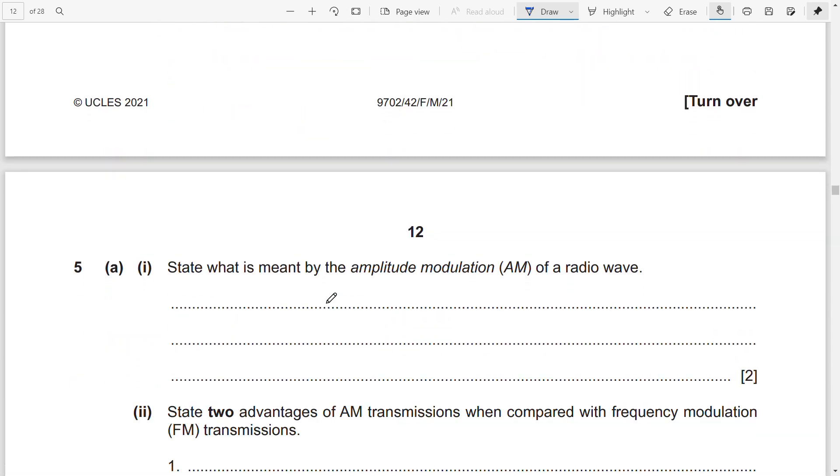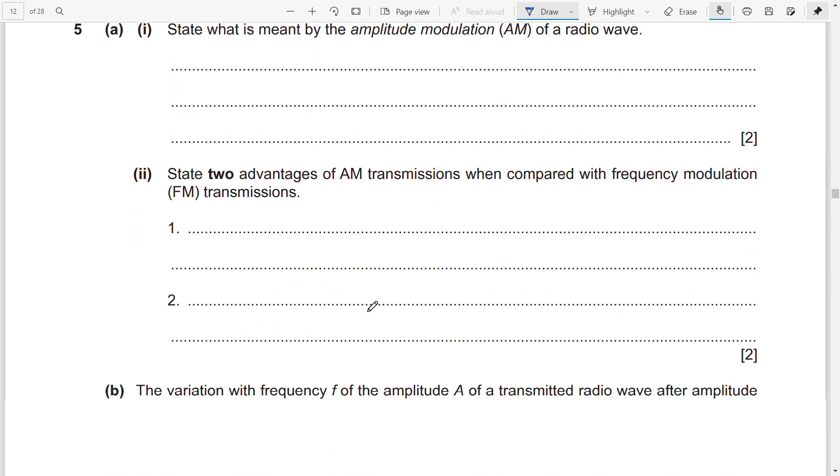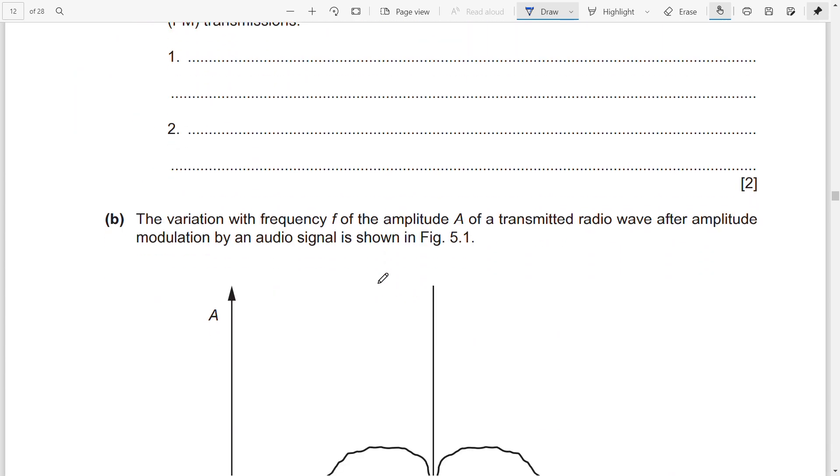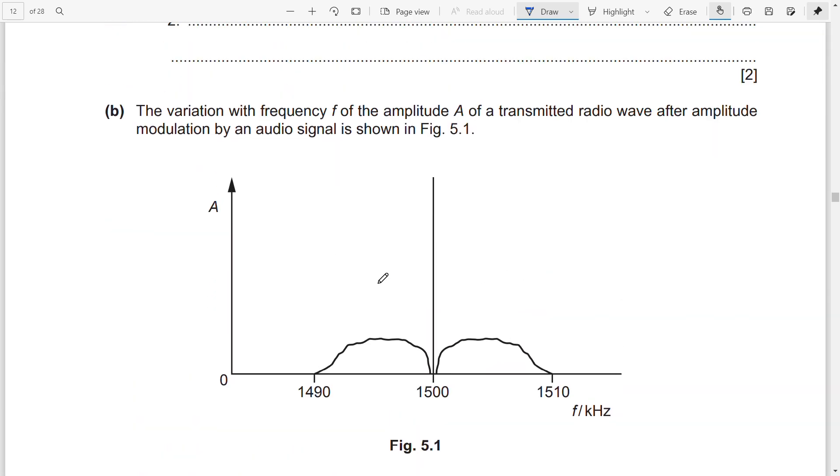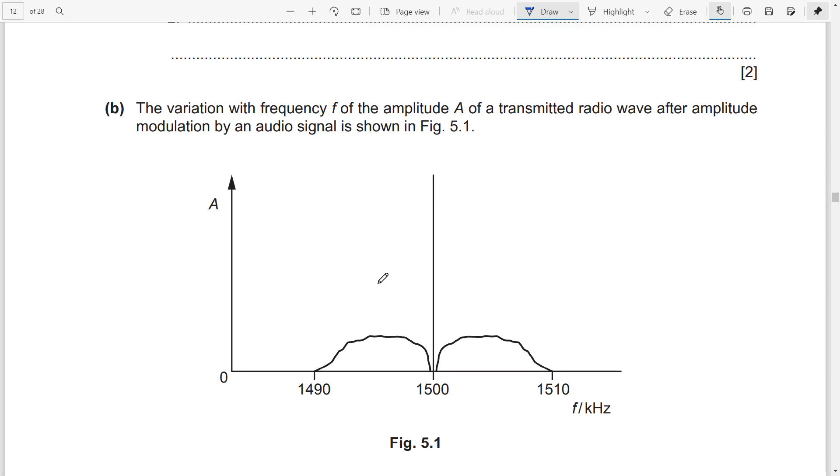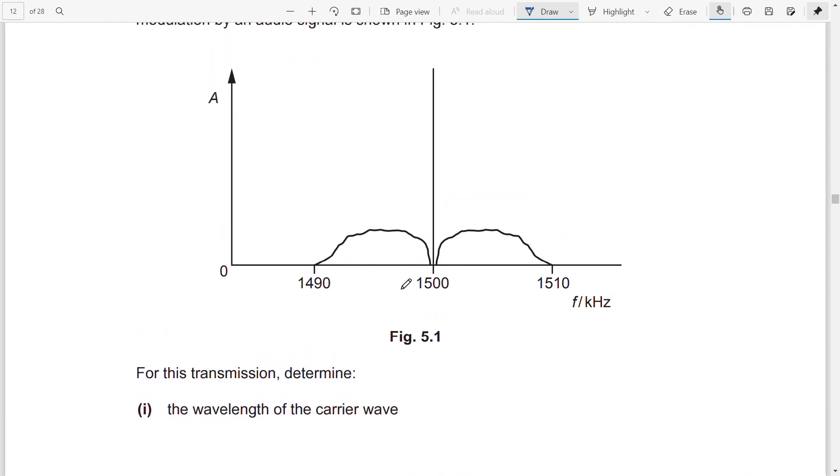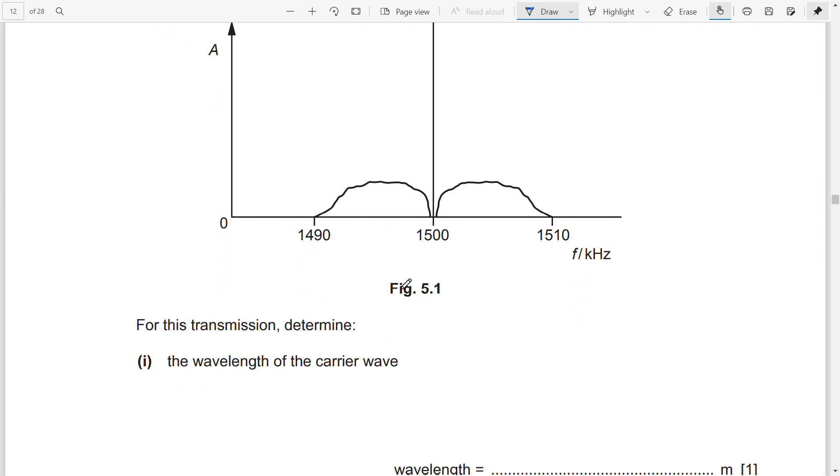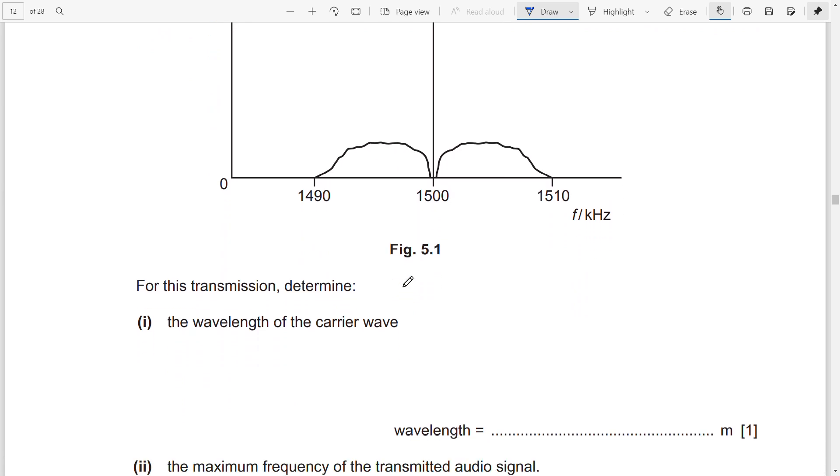Back to question number five. New question. What is meant by amplitude modulation of a radio wave? You can see the definition in the book, and this you can do on your own. This is not too difficult. Part B: the variation of frequency of the amplitude of a transmitted radio wave after amplitude modulation by an audio signal is shown in the figure.